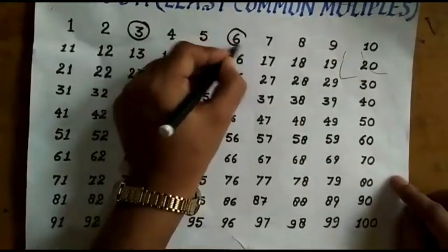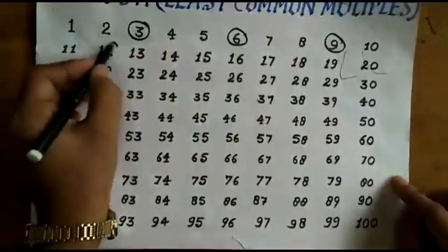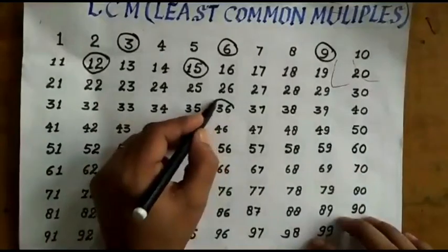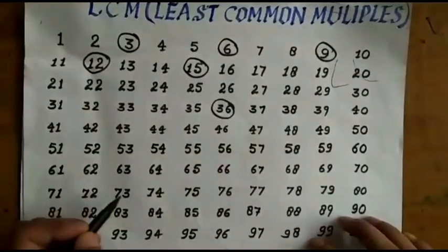So it is 3, 6, 9, 12, 15, and next we take 36 and next we take 72.